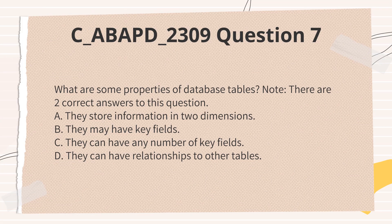What are some properties of database tables? Note: there are two correct answers to this question. A. They store information in two dimensions. B. They may have key fields. C. They can have any number of key fields. D. They can have relationships to other tables.